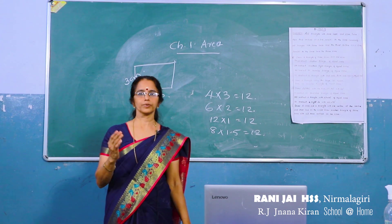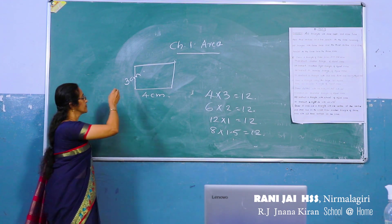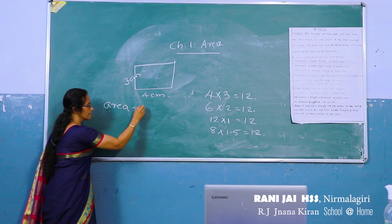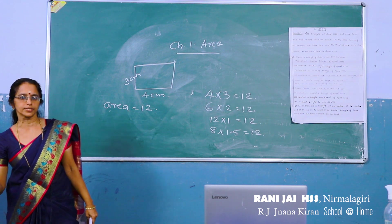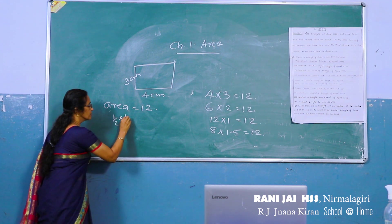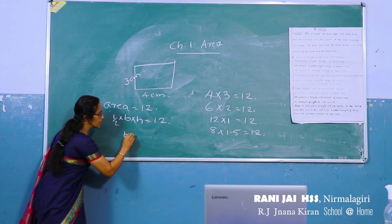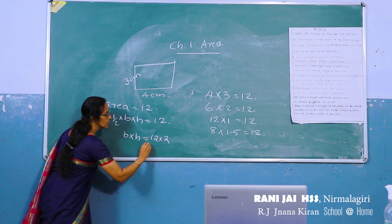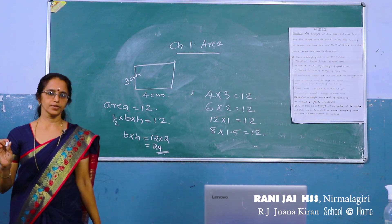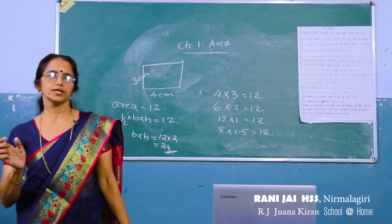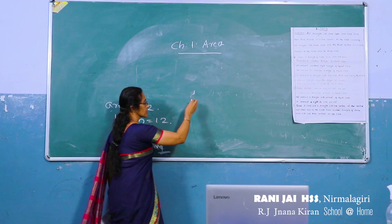Now we can pursue the triangle of area 12. Children, you know: half into base into altitude is the area of the triangle. So from this we get base into altitude equal to 12 into 2, that is 24. So we can draw a triangle where the product of the base and altitude is 24.